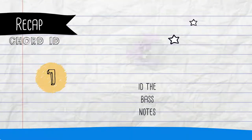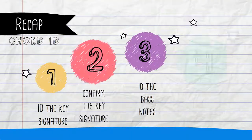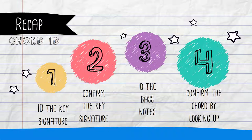So to quickly recap: ID the key signature, confirm the key signature, ID the bass notes, and then confirm the chord by looking up into the score.